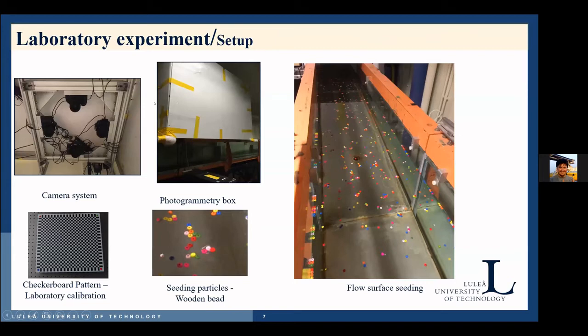The use of multiple cameras in one photogrammetry system enables fully resolving 3D components of the surface velocity. However, it raises some challenges in measurement setup as well as in data analysis. So it's important to investigate the properties of the photogrammetry system and the PTV algorithm to make sure that the system is appropriate to apply for field measurements. For this purpose, the surface velocity measurement of open channel flow in the lab was carried out to evaluate the applicability of the photogrammetry system.